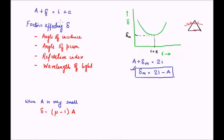Thirdly, the relation between refractive index and the angle of deviation is, again, a direct relation. That is, with increase in refractive index, delta increases.